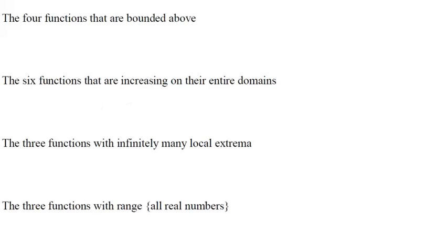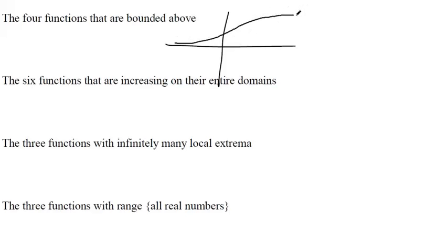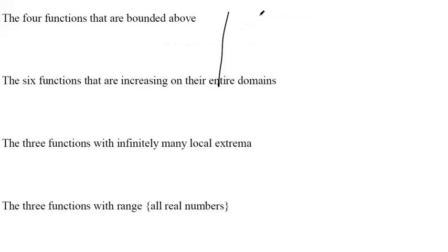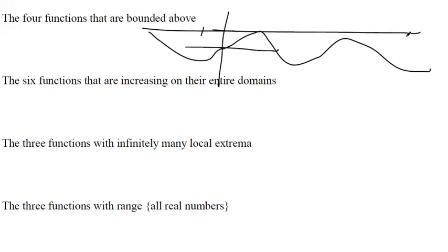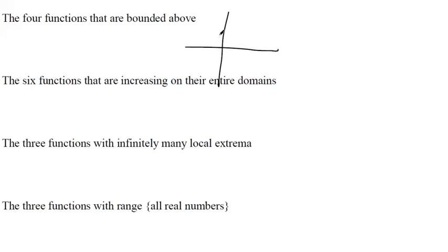Now, from the 12 basic functions in the text, we need the four functions that are bounded above. Being bounded above means the graph can go no higher than a certain y value. The logistic function is bounded above — it gets no higher than one. Sine is a wavy function that is also bounded above because you can get no higher than y equals one; there's a ceiling to it.